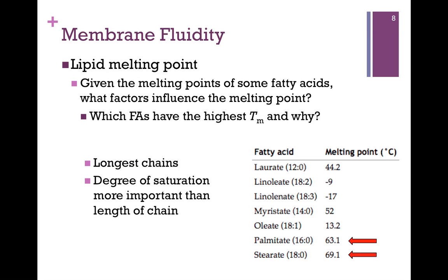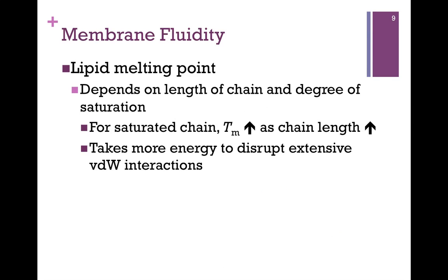If we compare linoleate, linolenate, and stearate, we see they are all 18-carbon compounds, but they vary greatly in their melting temperature — and that has only to do with the degree of saturation, which clearly has the largest impact. The lipid melting point depends on both chain length and degree of saturation, with saturation having more impact. For a saturated chain, as chain length increases, the melting temperature increases, because lengthening the chain adds more van der Waals interactions, making it harder to separate those molecules.